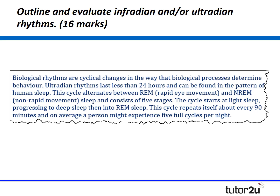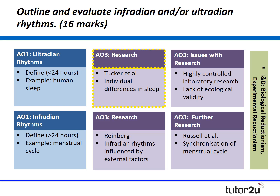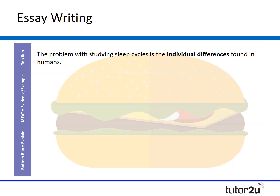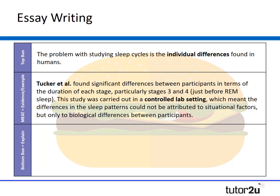We've outlined what we mean by ultradian rhythms and given some clear knowledge of the sleep-wake cycle. We're then going to want to evaluate that, starting with the research reported by Tucker. We're going to use simple burger evaluation paragraphs in this essay. A simple yet effective paragraph might read: the problem with studying sleep cycles is the individual differences found in humans — then we bring in our evidence, the meat of that burger.